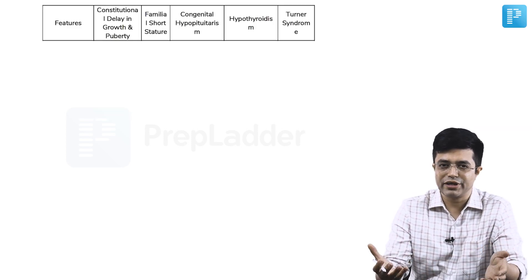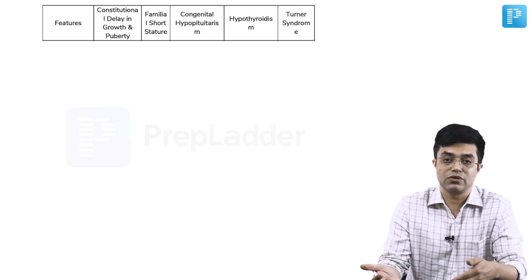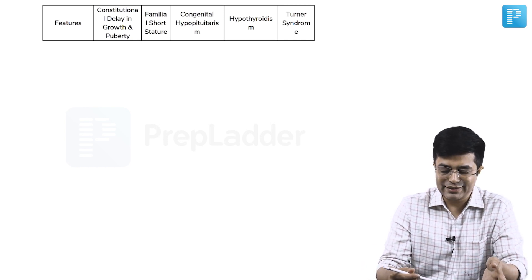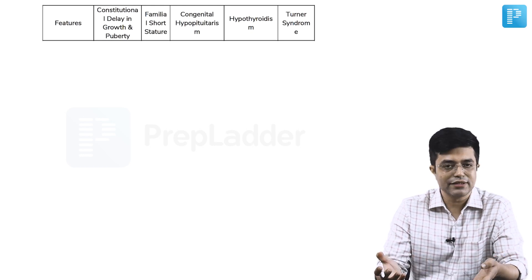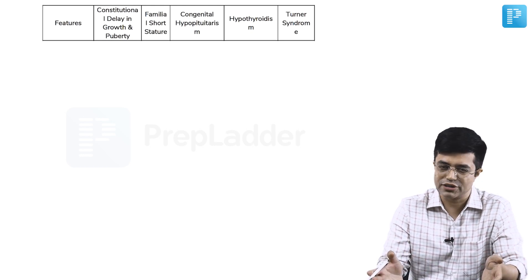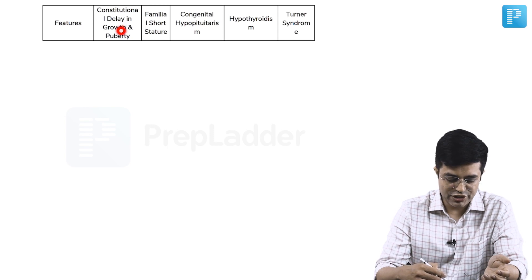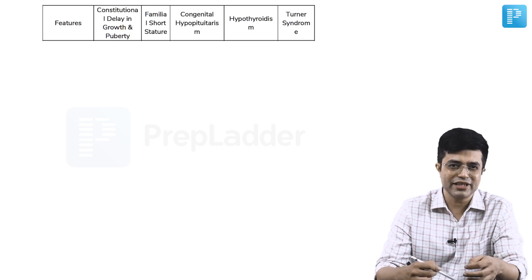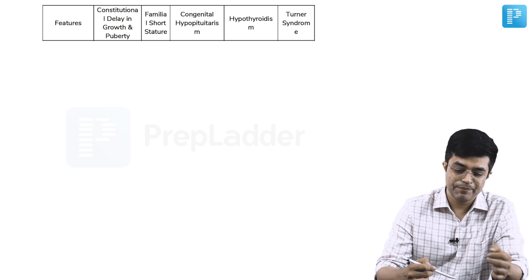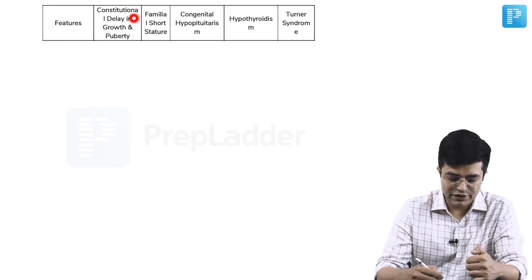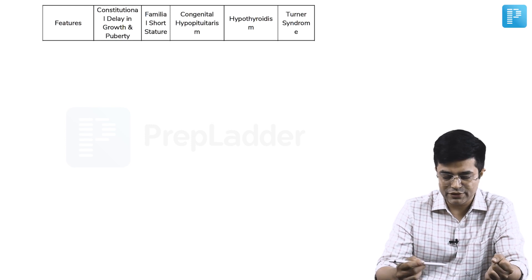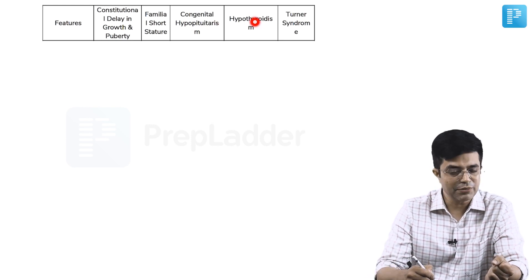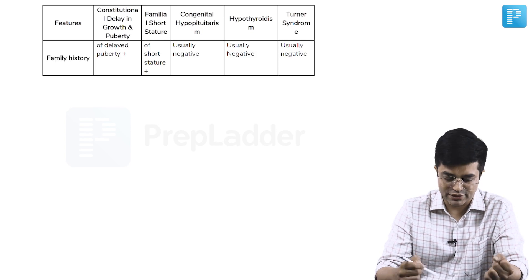A visual association is also important, so you can open the treasure and find that we are basically distinguishing five causes of short-stature in children. You have constitutional delay in growth in puberty, also called simply constitutional delay. We have familial short-stature. Both of them are included in the physiological type of short-stature. Then we have pathological varieties like congenital hypopituitarism, hypothyroidism, and also a syndromic cause — Turner syndrome.